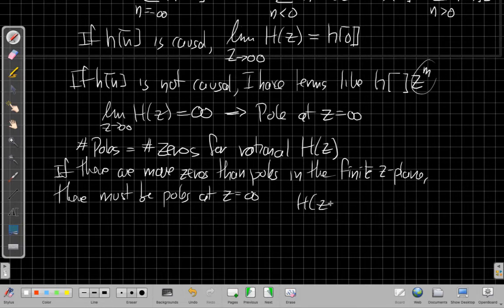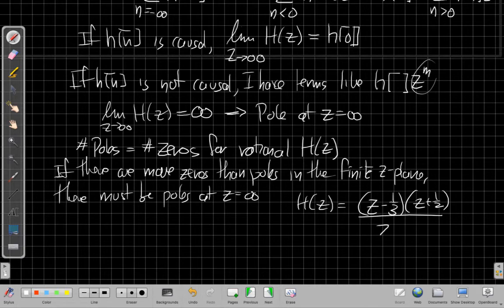So in that case, as z goes to infinity, the whole thing blows up. So for instance, if I had an h of z that was like z minus a third times z plus a half over z minus a quarter, and if z goes to infinity, this one would blow up. I have z squared in the numerator and only z in the denominator. This would have a pole at infinity.